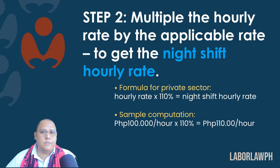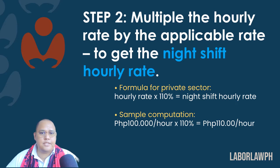Step 2: Multiply the hourly rate by the applicable rate to get the night shift hourly rate. The formula for the private sector is hourly rate times 110% equals night shift hourly rate. By way of sample computation, our 100 pesos hourly rate will be multiplied by 110% to result in 110 pesos per hour night shift hourly rate.